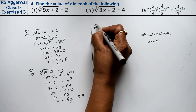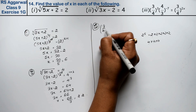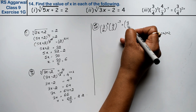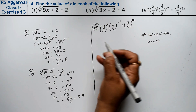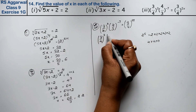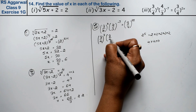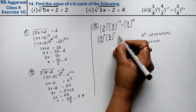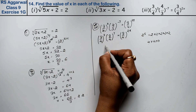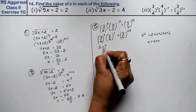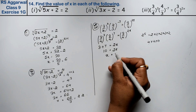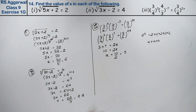Let's do the third part. The third part is: (3/4) to the power 3 times (4/3) to the power −7 equals (3/4) to the power 2x. We need to find x. Note that (4/3) is the reciprocal of (3/4), so (4/3)^(−7) = (3/4)^7. Combining powers on the left: 3 + 7 = 10 equals 2x. So x = 10 ÷ 2, and x = 5 is the answer.